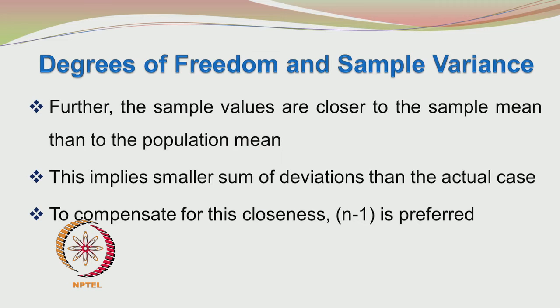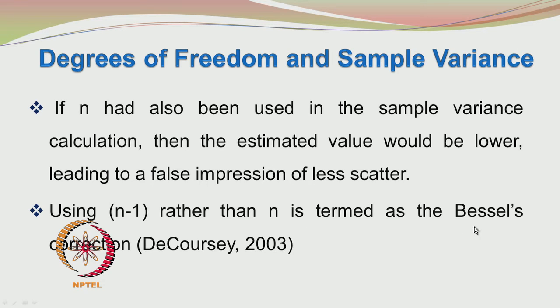If you are using the sample mean, you are going to get apparently less scatter because the sample mean is more closely related to the data values. Hence, instead of using n in the denominator, if you use n-1, then a partial compensation occurs. Using n-1 rather than n is termed Bessel's correction.